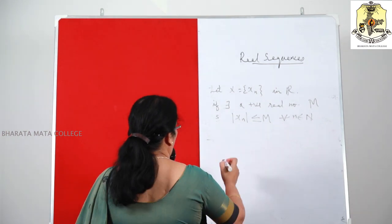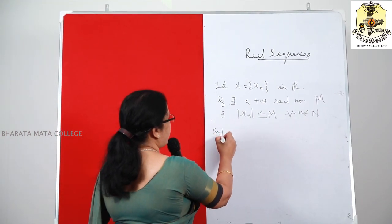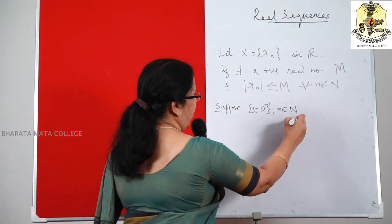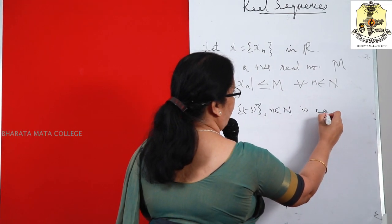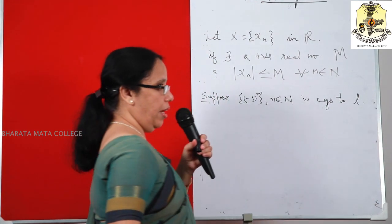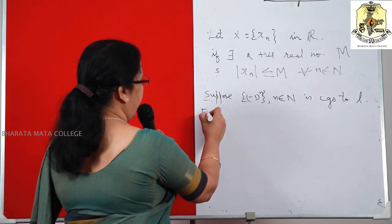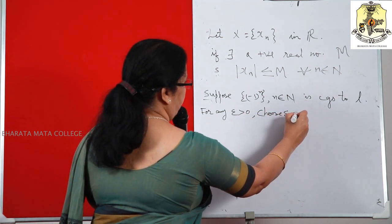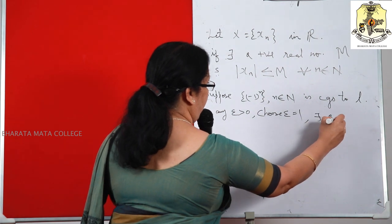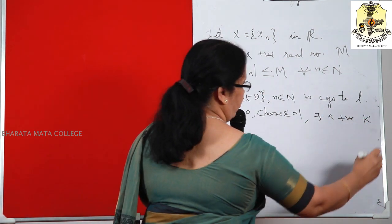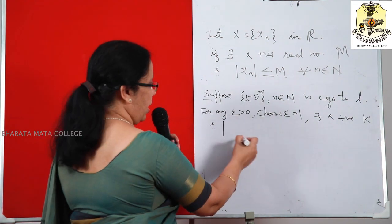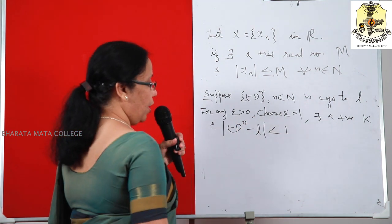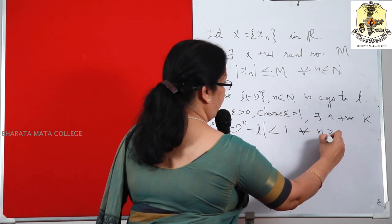How to prove it is not convergent? We assume the contradiction. Suppose the sequence {(-1)^N}, N belonging to N, is a convergent sequence — say it converges to some real number L. By definition, for any epsilon > 0, choosing epsilon = 1, there exists a positive integer K such that modulus of (-1)^N minus L is less than 1 for all N ≥ K.